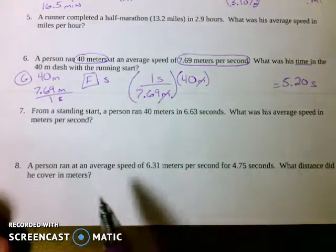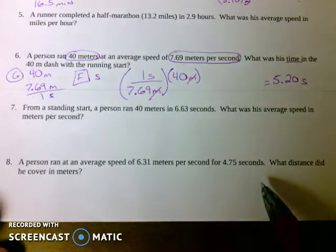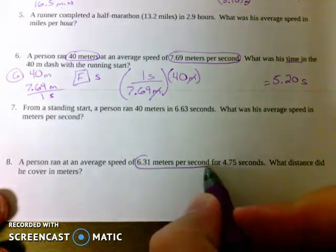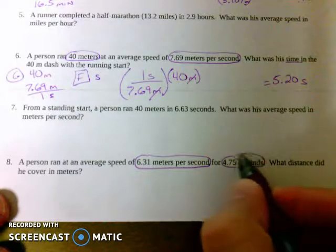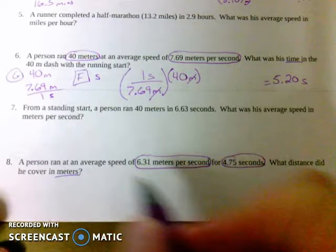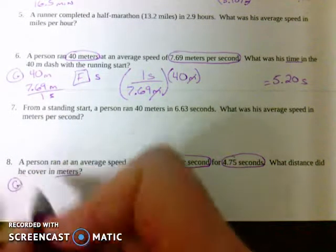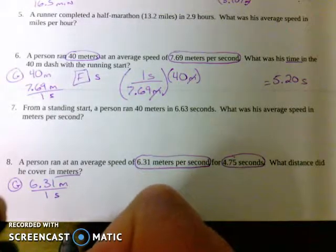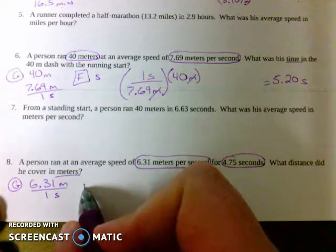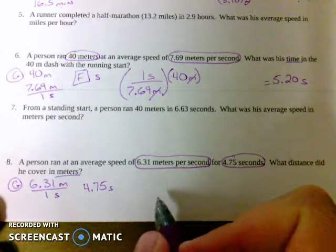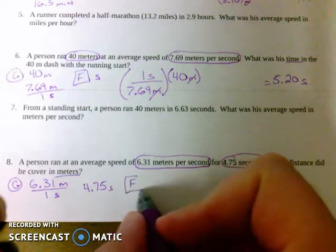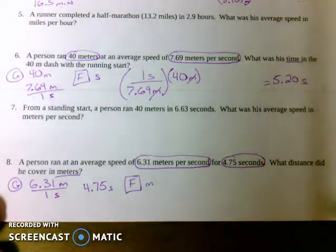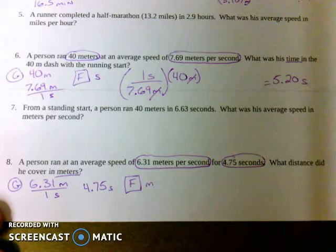We have a person ran at an average speed of 6.31 meters per second for 4.75 seconds. What distance did he cover in meters? That's what we're trying to find. Let's write down our givens. 6.31 meters in one second. That's my first given. My second given, I'll just write over here, 4.75 seconds. And then what am I trying to find? I'm trying to find the distance he covered, and that's just meters. Two givens, one find. All these problems on the first page are basically two givens and one thing you're trying to find.